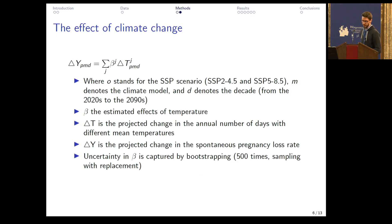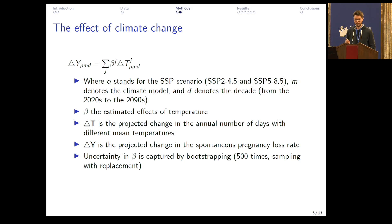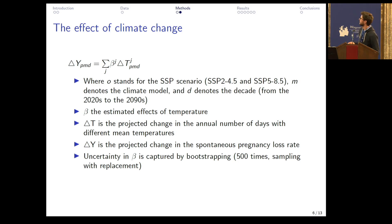To project the impact of climate change, we use the temperature coefficients from the previous equations and multiply them by the projected temperature changes, which are denoted by the delta T.